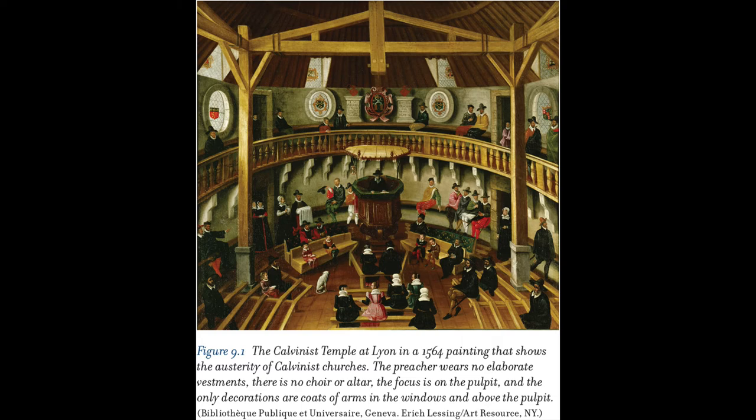In France, Switzerland, and the Low Countries, Jean Calvin (1509–1564) led a Protestant movement that rejected papal authority and accepted predestination. Calvin favored congregational singing and rejected anything elaborate. He insisted that only biblical texts should be sung in church, and he favored metrical psalms.